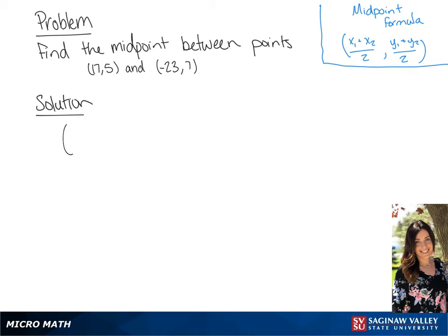We want to find our midpoint between point (17, 5) and (-23, 7). So we're going to plug these points into our midpoint formula. So we have (17 + (-23)) / 2, and (5 + 7) / 2. If we simplify this, we are going to get a midpoint of (-3, 6).